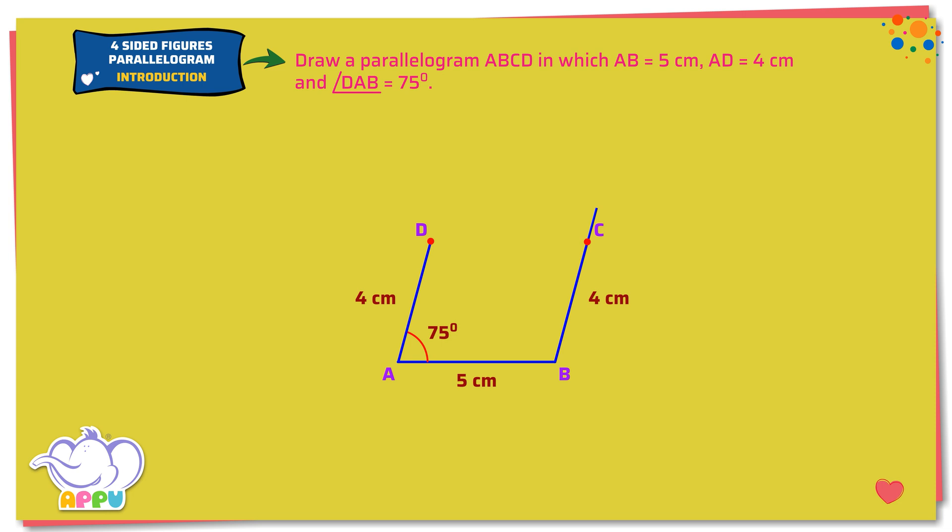Step 3. Join DC. We mark single arrows to indicate AB is parallel to CD and two arrows to indicate AD is parallel to BC.